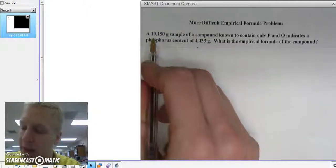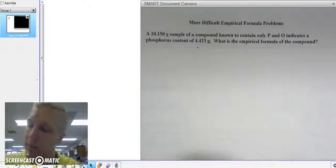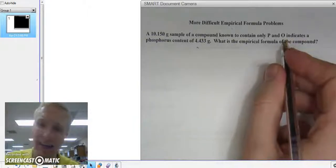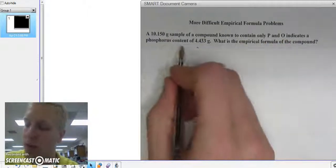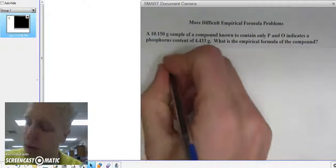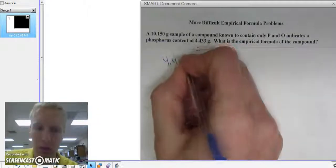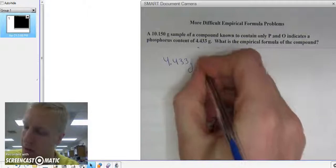What we have is 10.15 grams of a compound, and it contains phosphorus and oxygen, and the total phosphorus content has a mass of 4.433 grams. So that's phosphorus.